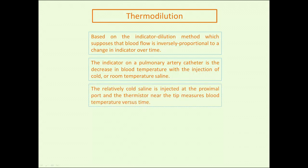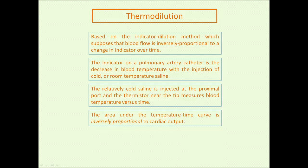The relatively cold saline is injected at the proximal port—the blue port—and it comes out 30 centimeters from the tip, which for most patients is in the right atrium. The thermistor, about four centimeters from the tip of the pulmonary catheter, measures blood temperature versus time. The area under that temperature-time curve is inversely—repeat, inversely—proportional to cardiac output.